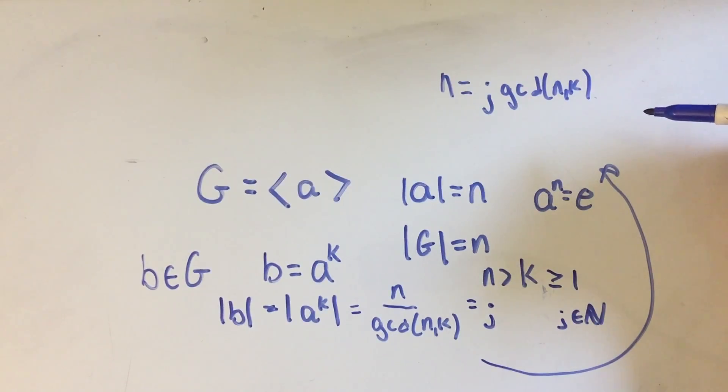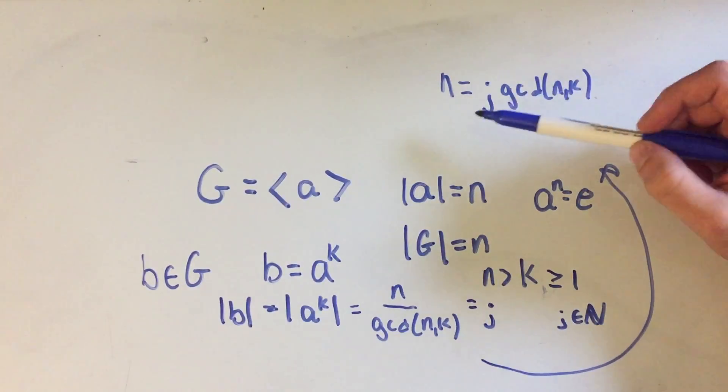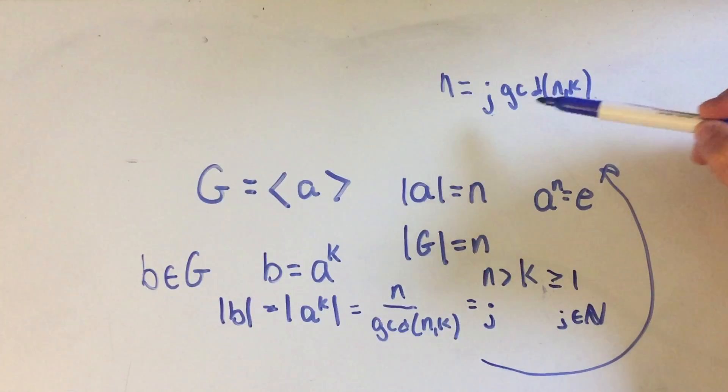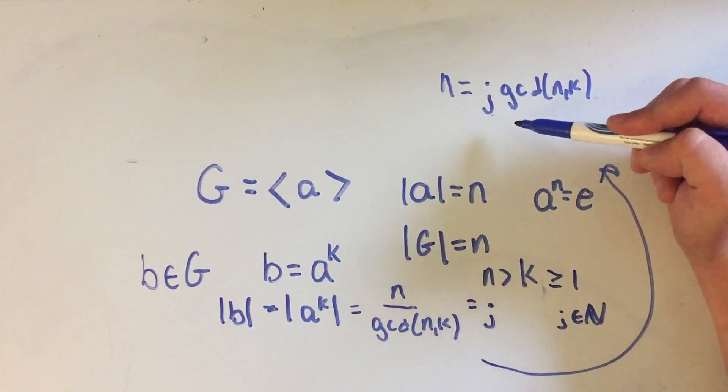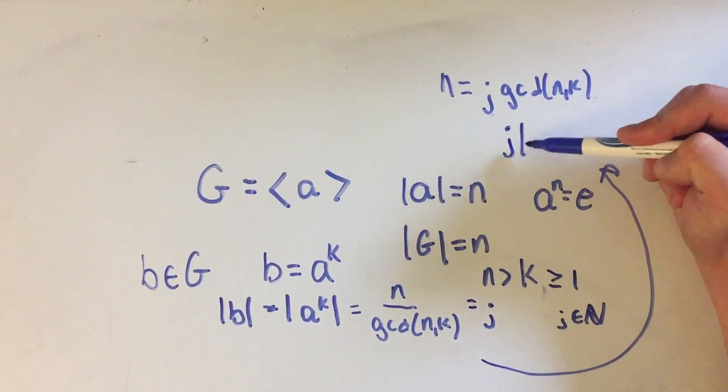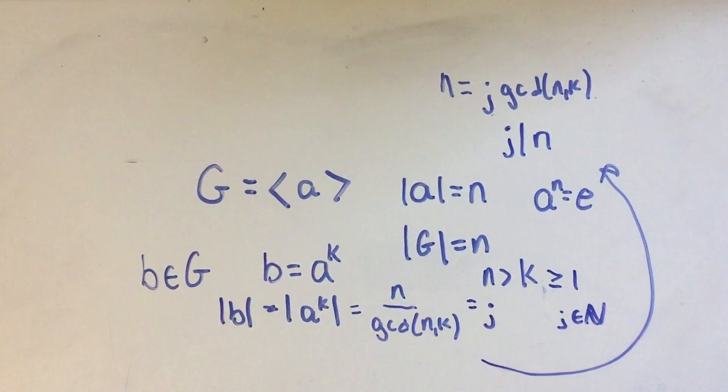Well, all that means from number theory is that N is a multiple of J, right? If I multiply J by itself, or if I multiply J enough times, I'll get N. All this means is that J divides N, since J is a multiple of N.